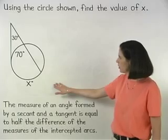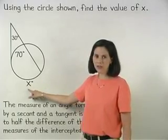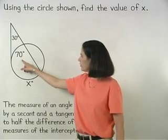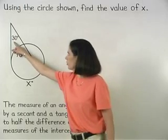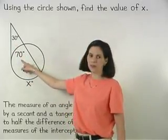And in the diagram shown, since the measures of the intercepted arcs are x degrees and 70 degrees, we can set up the equation 30 equals 1 half times x minus 70.